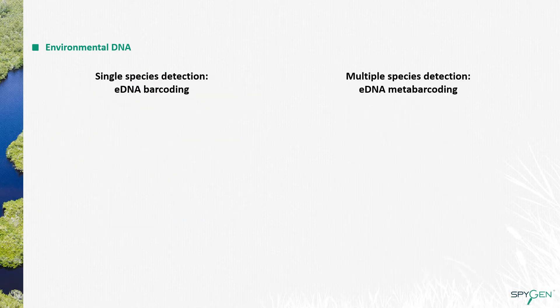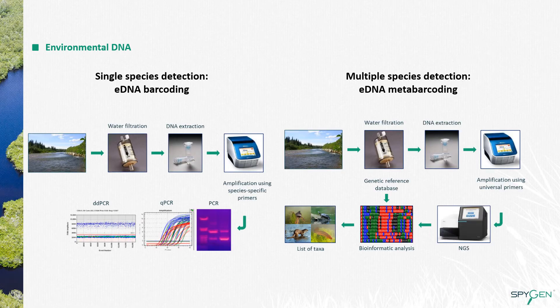When using eDNA, there are two main approaches: the single species detection, also called eDNA barcoding, and the multi-species detection, eDNA metabarcoding. For both methods, the first steps of the workflow are the same — we go to the field, in this case a river, and we collect an environmental sample, filtering some liters of water through a filtration cartridge. We go back to the lab and extract the DNA, but the two approaches differ on the way this DNA is analyzed.